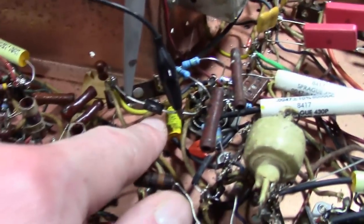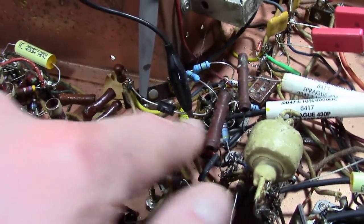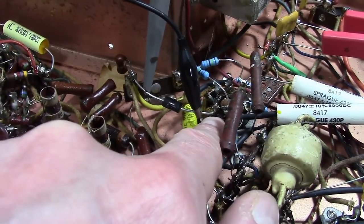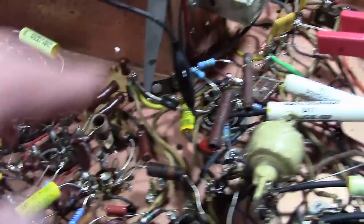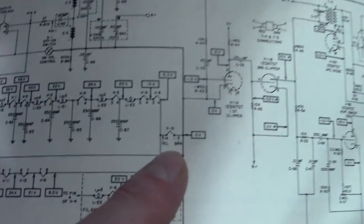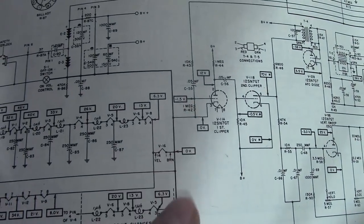That's what this black device is right here. So on this side, that is common return or B- for the set. And this side is the CRT filament. In other words, we're right over here. The V14 is the CRT. So there's the common return, and then there's the other side.